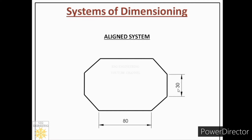So we write the dimension on this side, satisfying both conditions: above the dimension line and at the middle. Under the aligned system, vertical dimensions must be readable from the right side of the page — not from the bottom. To summarize: horizontal dimensions must be readable from the bottom of the page, and vertical dimensions must be readable from the right side. In both cases, the two rules apply — above the line and at the middle of the dimension line.